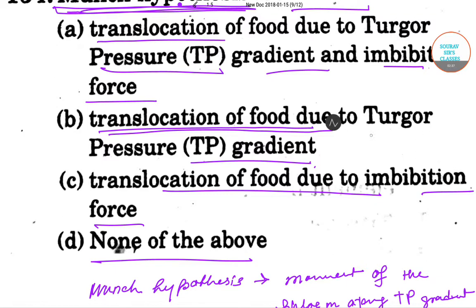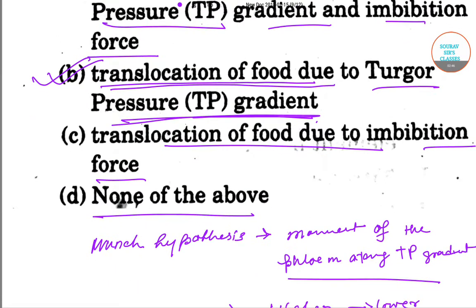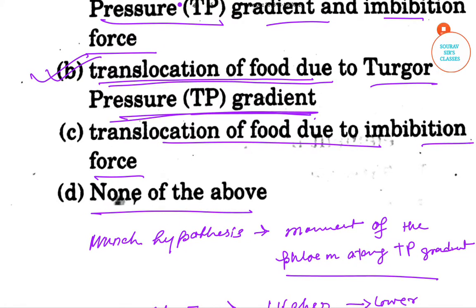So the answer is translocation of food due to turgor pressure gradient, which means the answer is option B.